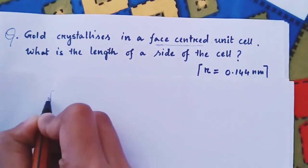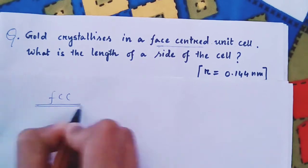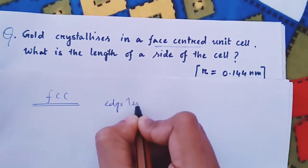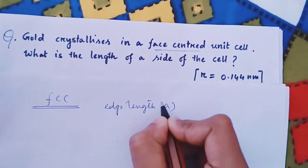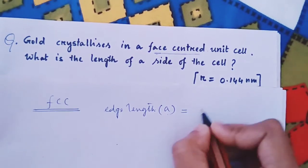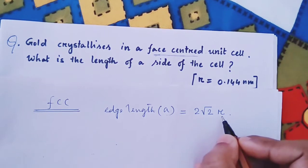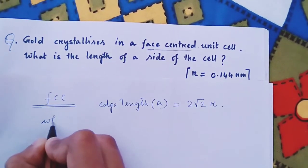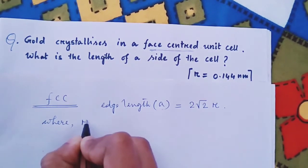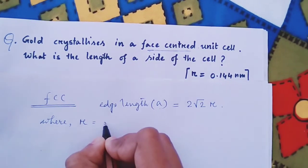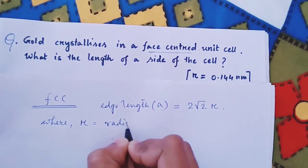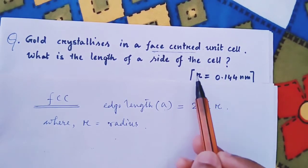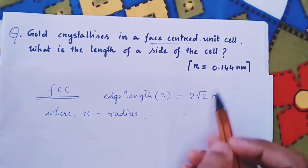For an FCC unit cell, we know the edge length a is equal to 2√2 × R, where R is the radius. Now in the question, the radius is given as 0.144 nm. Put this value into the formula.